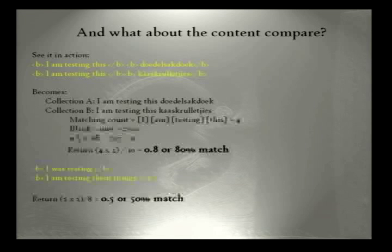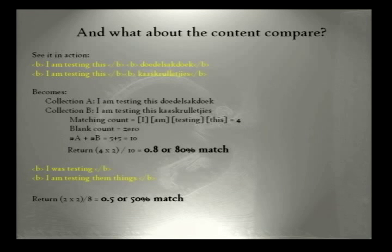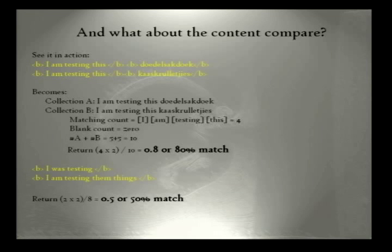Here's what it looks like. Let's say I'm testing two strings. The first string is 'I'm testing this doodle suckduk' and the second string is 'I'm testing this kas krelikis.' Collection A is 'I'm testing this doodle suckduk' and collection B is 'I'm testing this kas krelikis.' There are four words matching between the two collections. Blank count is zero. The number of items in collection A is five, and in collection B is five. So our return is an 80% match — 0.8. It's nothing like super fuzzy neural networks. It's just kind of easy.